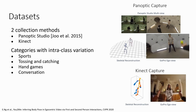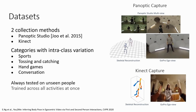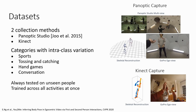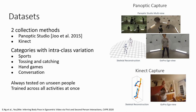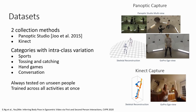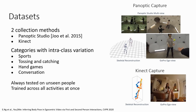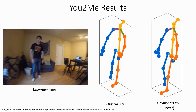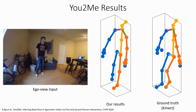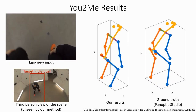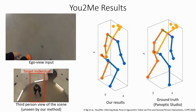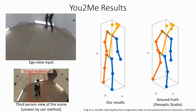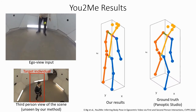We stress that our method is tested on unseen people and is trained across all of the activities at once. As shown in these examples, our method successfully captures the link between how other people respond in their body pose as a function of one's own ego body pose.